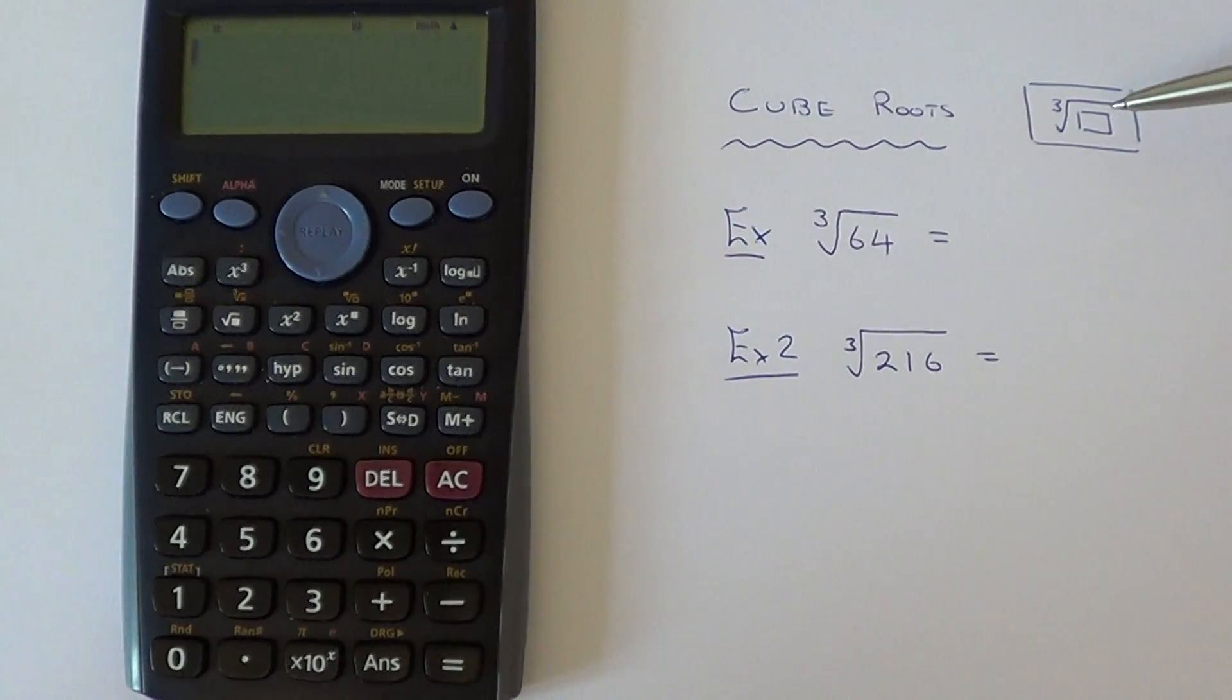To do this you will need to look for the key with a root and a box underneath it and a little 3 by the root which stands for the cube root.